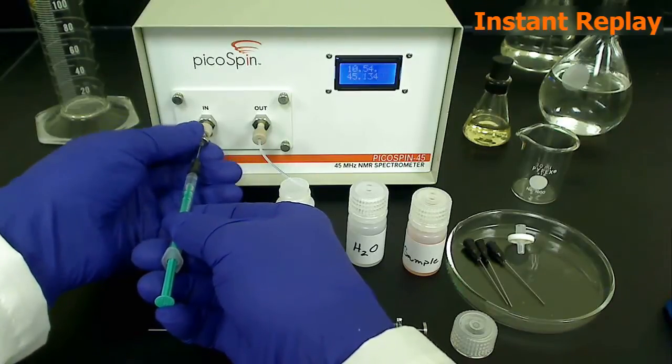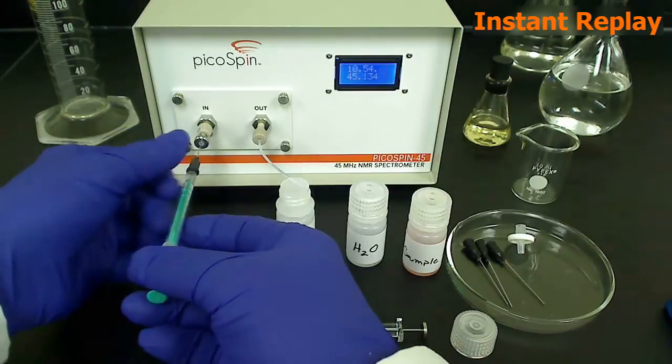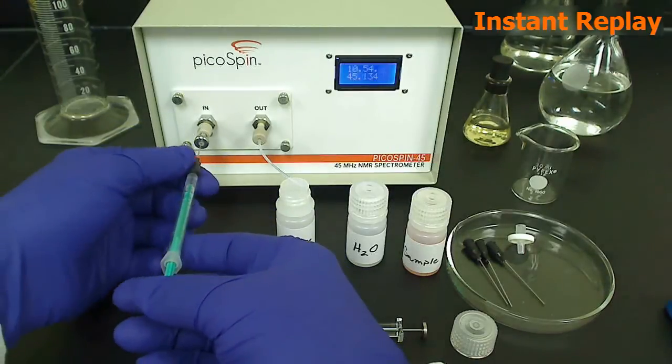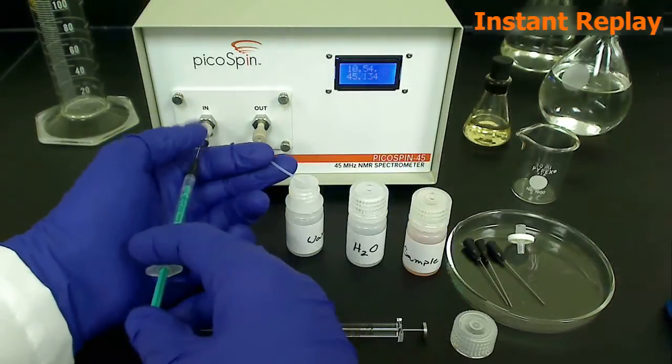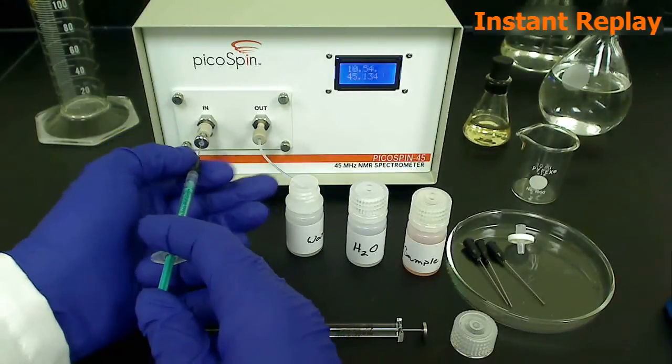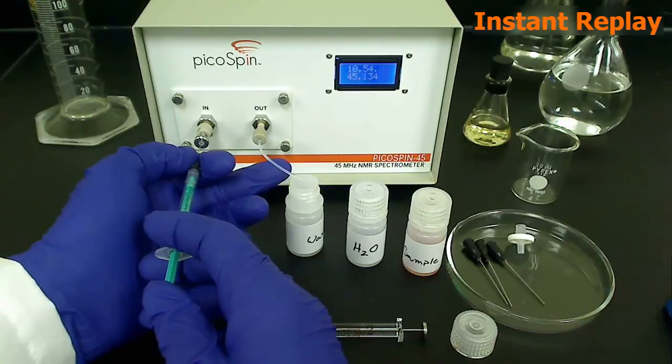To completely displace the sample resident in the cartridge, one needs to inject approximately 25 microliters of sample. This amounts to approximately 3 to 4 droplets being formed at the exit of the drain tube. You can inject as much sample as you like, so long as at least 3 to 4 droplets have been formed.